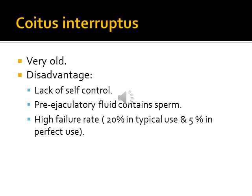Coitus interruptus is a very old method where coitus is not completed and ejaculation occurs outside the vagina. Its disadvantages include lack of self-control and the fact that pre-ejaculatory fluid contains sperm. It has a high failure rate: 20 percent in typical use and 5 percent in perfect use.